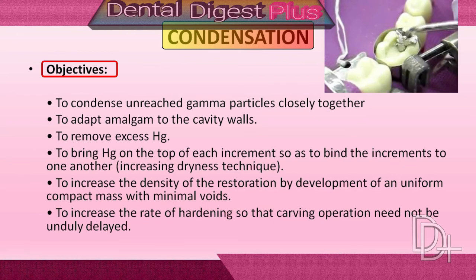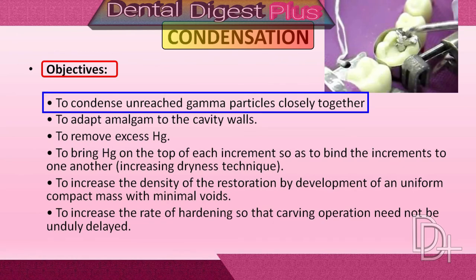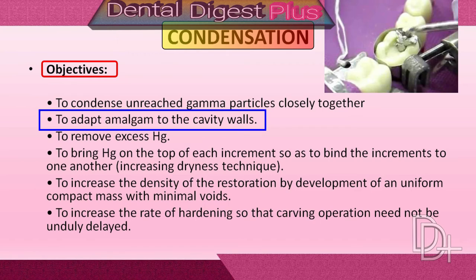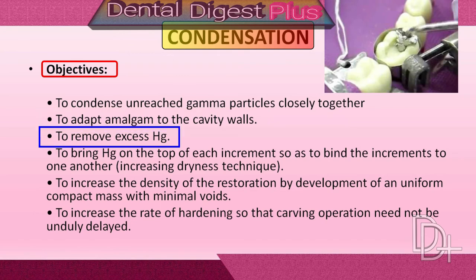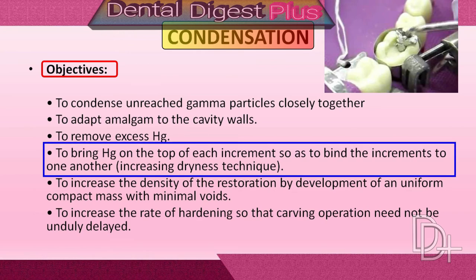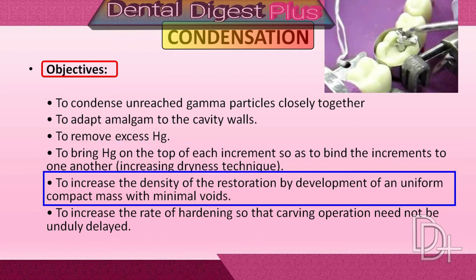The objectives of condensation include: bringing unreacted gamma particles together; adapting amalgam to the margins, walls, and line angles of the cavity; reducing the mercury content as much as possible; bringing mercury to the top of each increment; binding increments to one another; and minimizing voids within the amalgam mass, thereby increasing the density of the restoration.